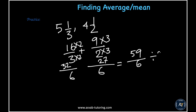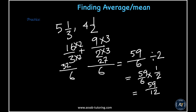Now divide 59/6 by 2, which gives 59/6 times 1/2 equals 59/12. Convert to a mixed number: 12 goes into 59 four times (4 times 12 is 48), subtract to get 11 remainder. So the average of the two mixed numbers is 4 and 11/12.